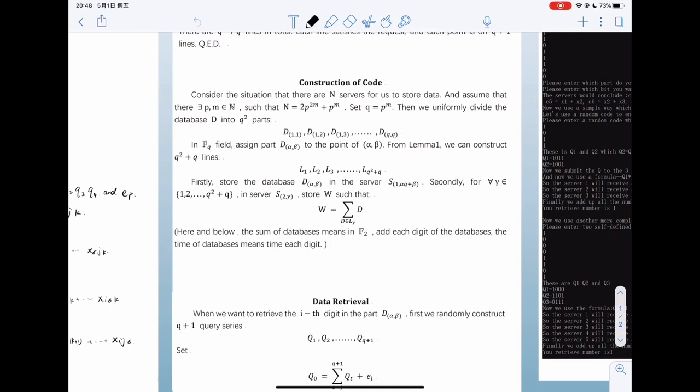And the server s2_γ stores the addition of all the database from l_γ. And here and below, the sum of database means that in F_q, add each digit of the database.